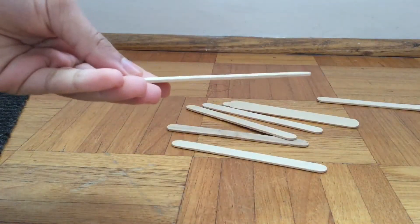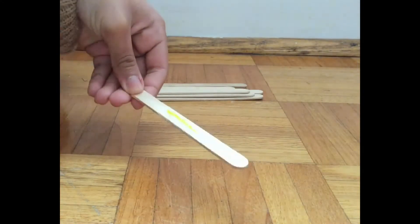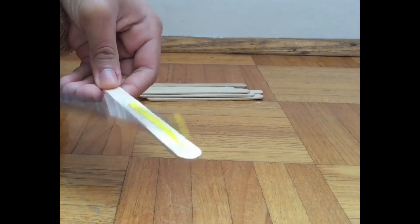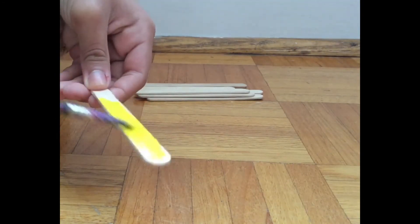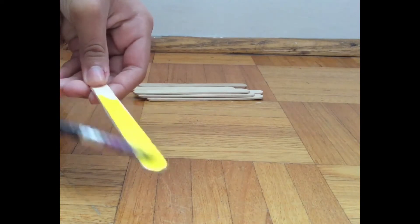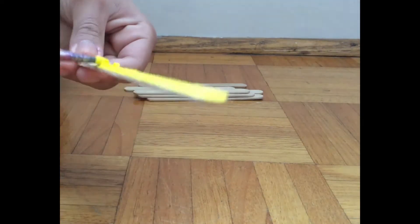So we are going to start off taking popsicle sticks, and you need eight popsicle sticks for each color. I'm first painting yellow and you don't need to paint it at the back, but I accidentally did, so don't make my mistake and don't waste your time.